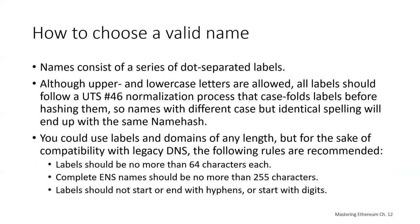Sub-domains can themselves have sub-domains — there could be a sub-sub-domain of subdomain.example.eth, then a sub-sub-sub-domain, and so on. To avoid extensive recomputation, since name hash depends only on the name itself, the node for a given name can be pre-computed and inserted into a contract, removing the need for immediate lookup of ENS records regardless of the number of components in the name.